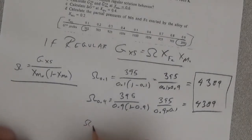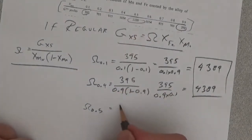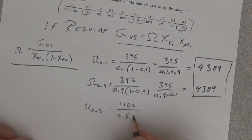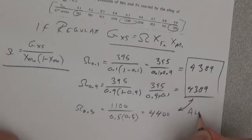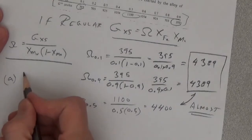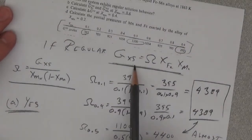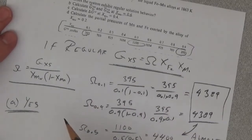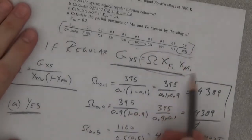Let's try ω at x=0.5: that's 1100 divided by 0.5 times 0.5, which equals 4400. These values are almost the same. So the answer to part A is yes — the excess free energy seems to obey the expression for a regular solution.